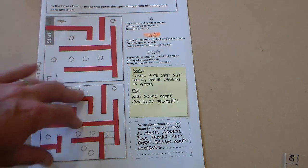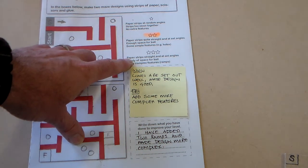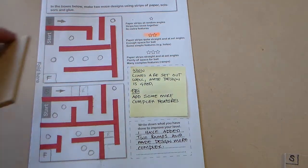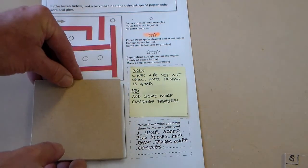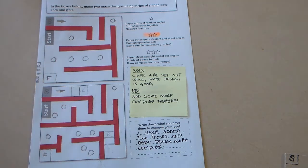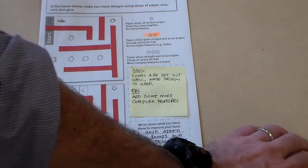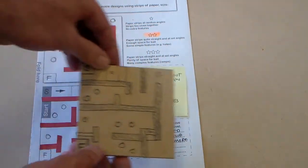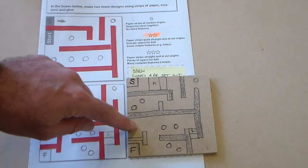Once we've got a design that we think is three stars, what we can do is take our square of MDF that we're going to put our maze on and we can carefully, using a pencil, transfer that design onto our square of MDF.